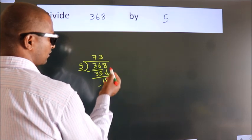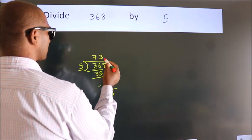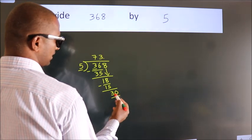After this, there are no more numbers to bring down. So, what we do is put a dot and take 0. So, 30.